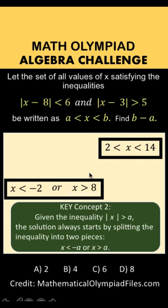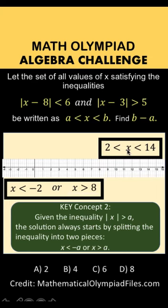Now let's graph these two solutions on a number line. The first one, 2 < x < 14 as an open inequality, gives us an open interval from 2 to 14.